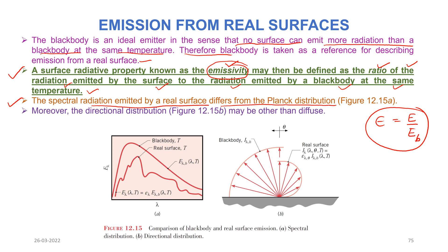The spectral radiation emitted by a real surface differs from the Planck distribution. A real surface will not emit exactly as given by the Planck distribution, which is for a black body. In a diagram, the black body spectral emissive power shows a smooth curve, whereas for a real surface at the same temperature T, the behavior is staggered — not a smooth variation.